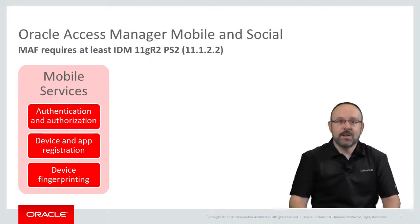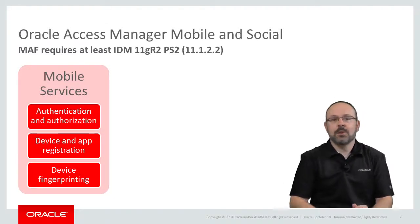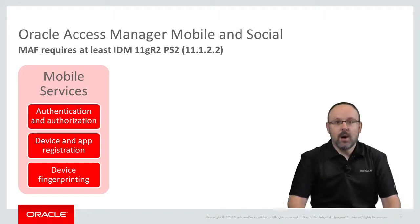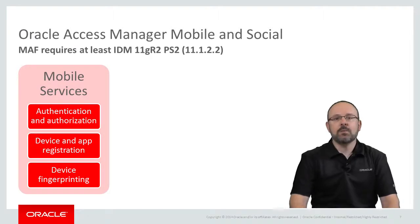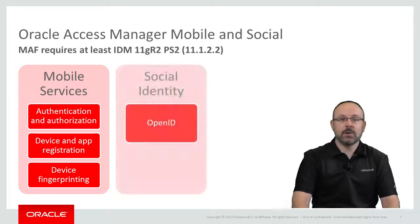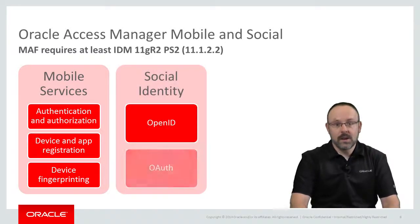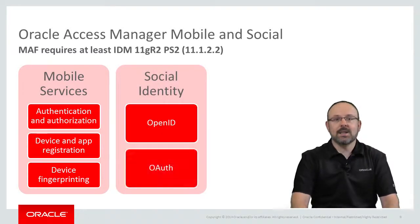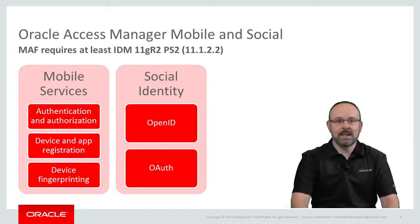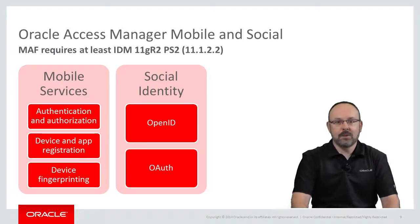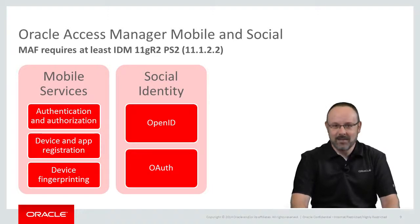The second set of features is about social identity. OAMMS supports the OpenID and OAuth protocols. It can thus integrate with several internet-based identity providers such as Facebook, Google, LinkedIn, Twitter, and Yahoo.